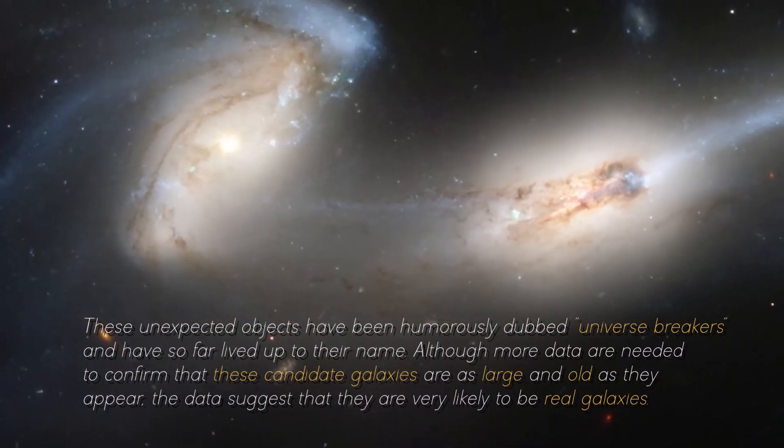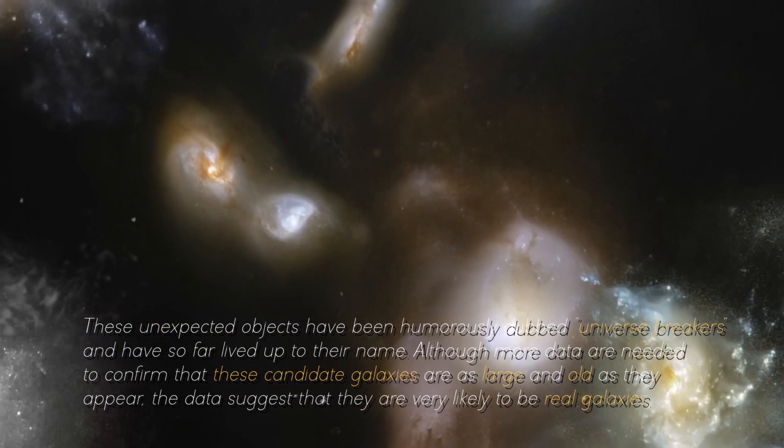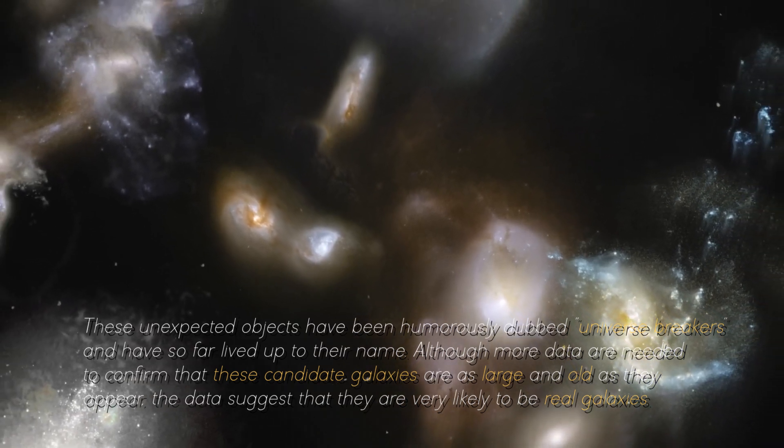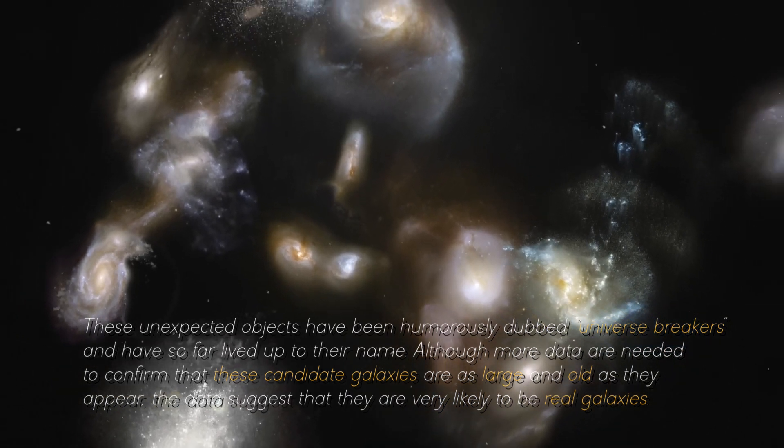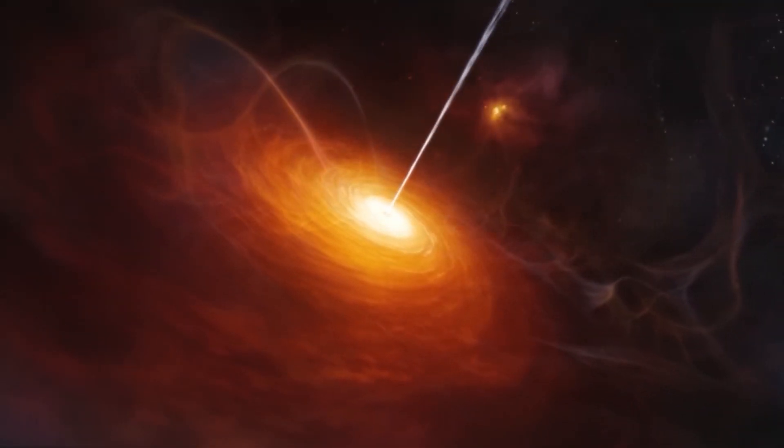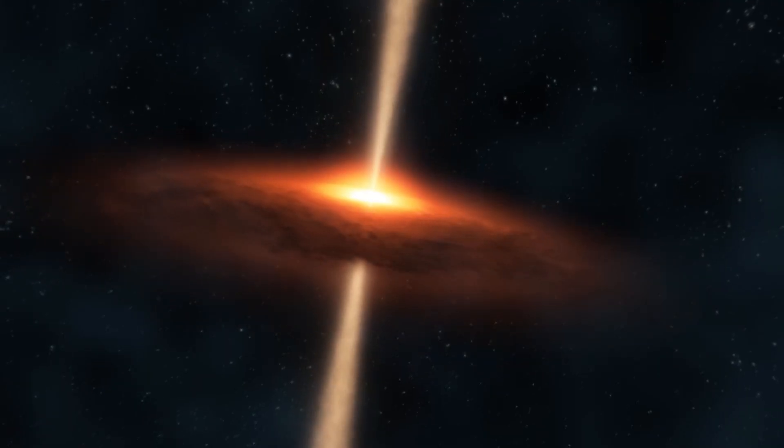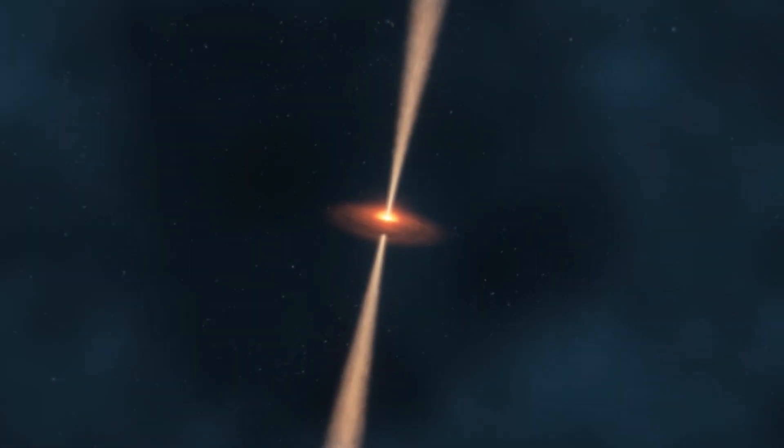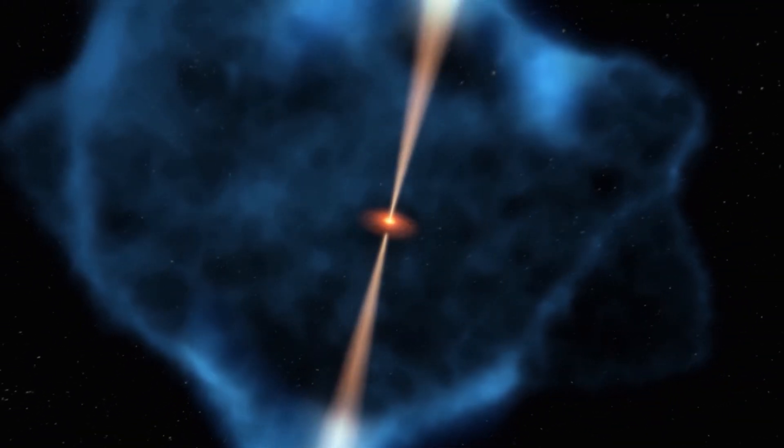These unexpected objects have been humorously dubbed universe breakers and have so far lived up to their name. Although more data are needed to confirm that these candidate galaxies are as large and old as they appear, the data suggests that they are very likely to be real galaxies. There is the possibility that some of these objects are obscured supermassive black holes, which is another interesting aspect to consider. However, the amount of mass discovered implies that the known mass of stars at this stage of the universe is up to 100 times larger than previously thought.